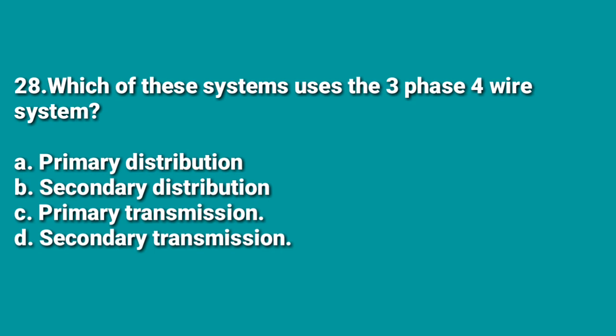The next question: which of these systems uses the 3-phase 4-wire system? A: primary distribution, B: secondary distribution, C: primary transmission, D: secondary transmission. The 3-phase 4-wire system is utilized in secondary distribution, so B is the correct answer.